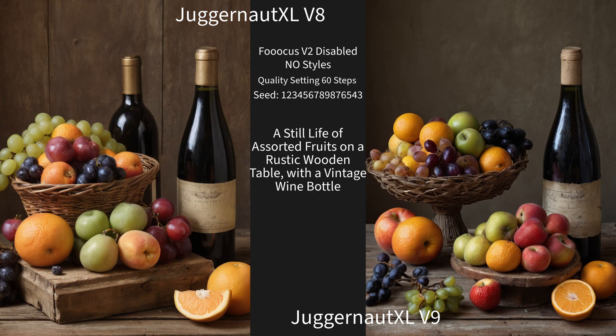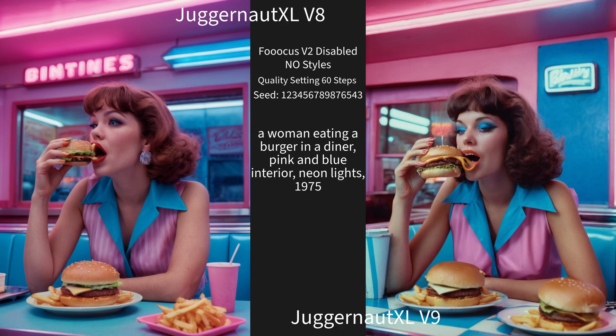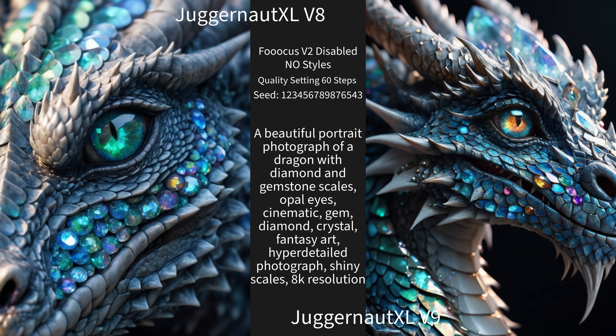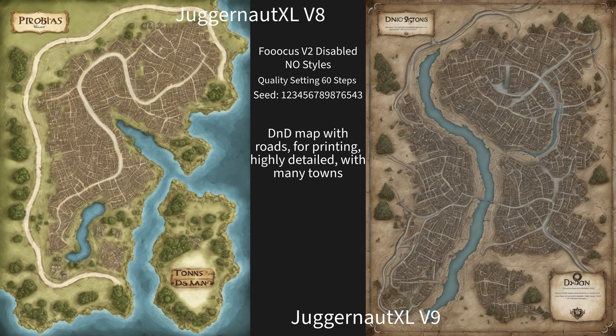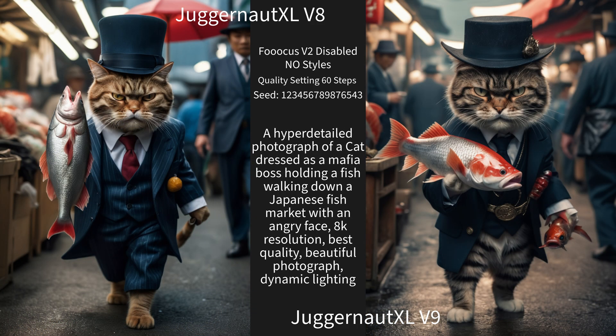As far as the still life of assorted fruits, I like Juggernaut V9 better — it's got one bottle, which is what we asked for, and I think the color is a little better. As far as our woman eating a burger, I think the one on the right actually has a little more detail. And for our dragon, I don't think either one is any better — they're both good and very similar. For our D&D map printing, not bad on either one. The one on the left is brighter colors, but that could just be random image generation difference — hard to say one way or the other. And for our cat mafia boss — I am really not sure on this one. Certain parts of the one on the right I like, and certain parts of the one on the left I like. There's more color to the one on the left, but overall the one on the right otherwise — hard to say.